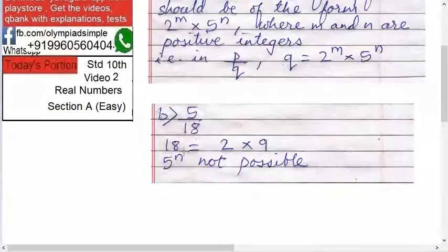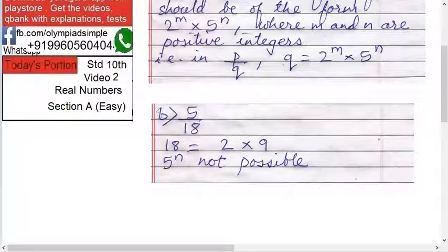Second one is 5 upon 18. So 18 is 2 times 9. Is 5 raised to n possible? 5 squared, 5 cubed, nothing. So not possible. This is not terminating.